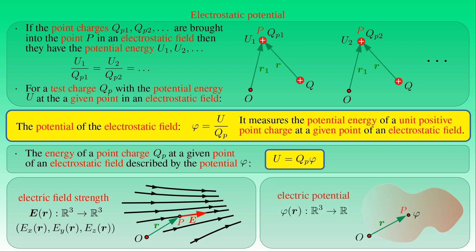The electric potential φ is another description — a scalar-valued function of position mapping any point P to the potential of the electrostatic field. Only one scalar-valued function is needed to describe the field, measuring the work done on a unit positive point charge brought from infinity to a given point. This shows it is more convenient to use electrostatic potential than electric field strength, and in practice it is more straightforward to determine the spatial distribution of an electrostatic field using potential.